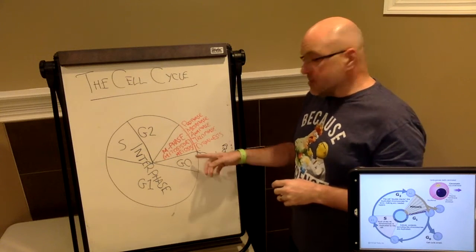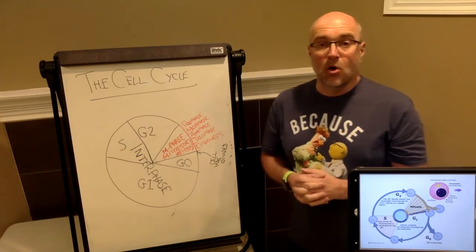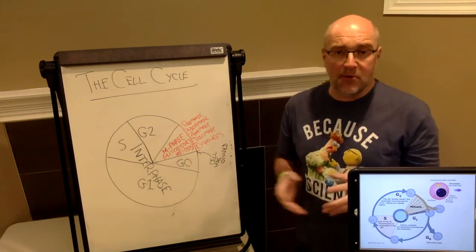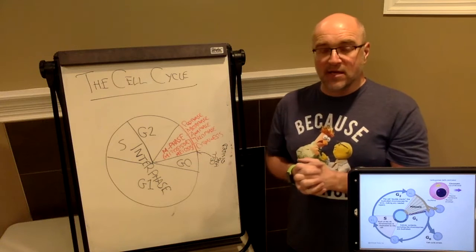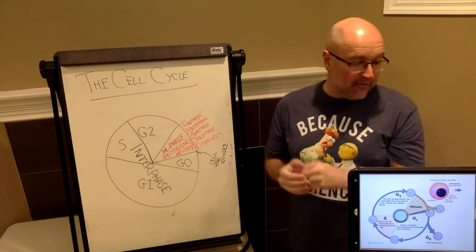Now the two daughter cells either enter into a stage of G0 or directly into G1, depending on what type of cell they are, and the life cycle basically starts all over again for both of the daughter cells.